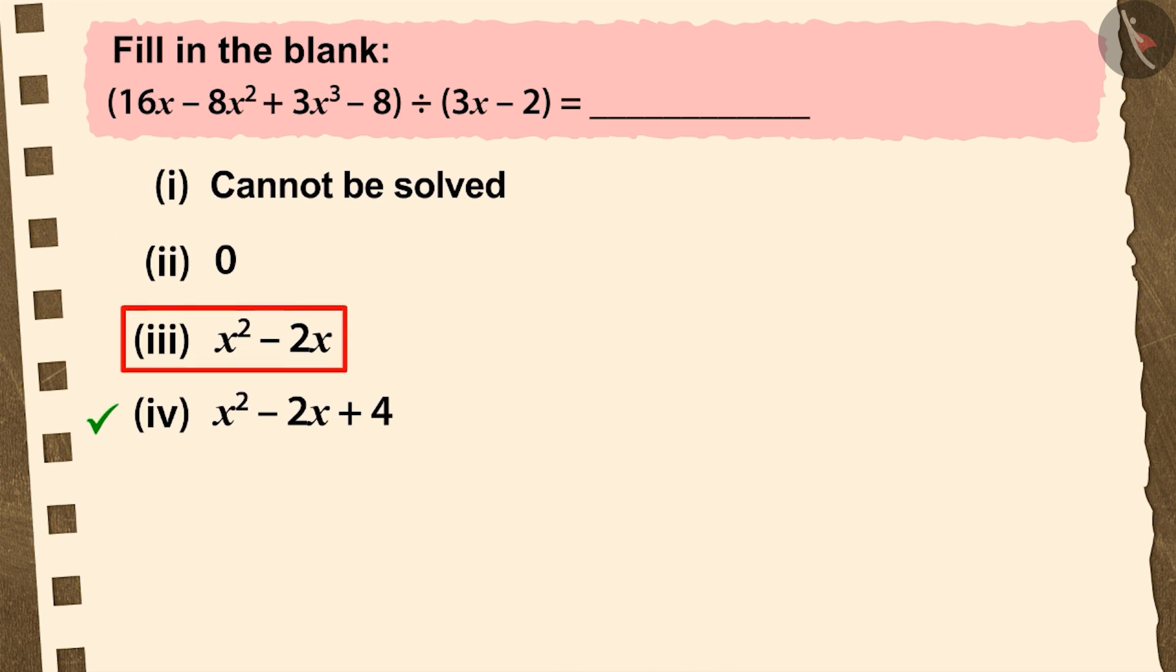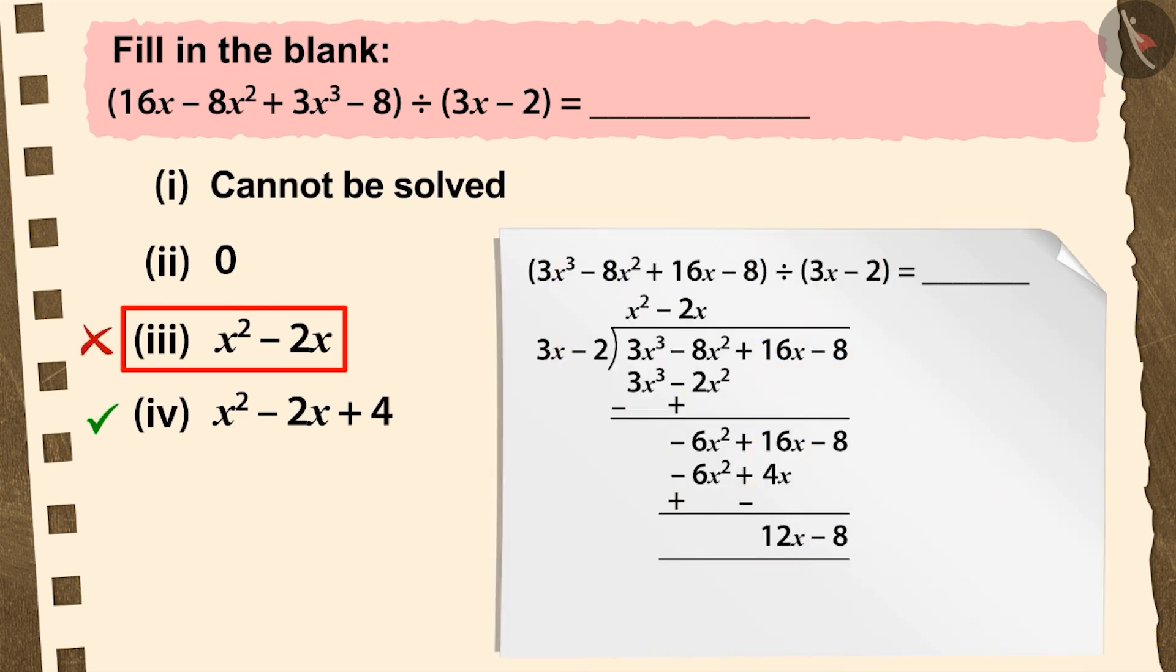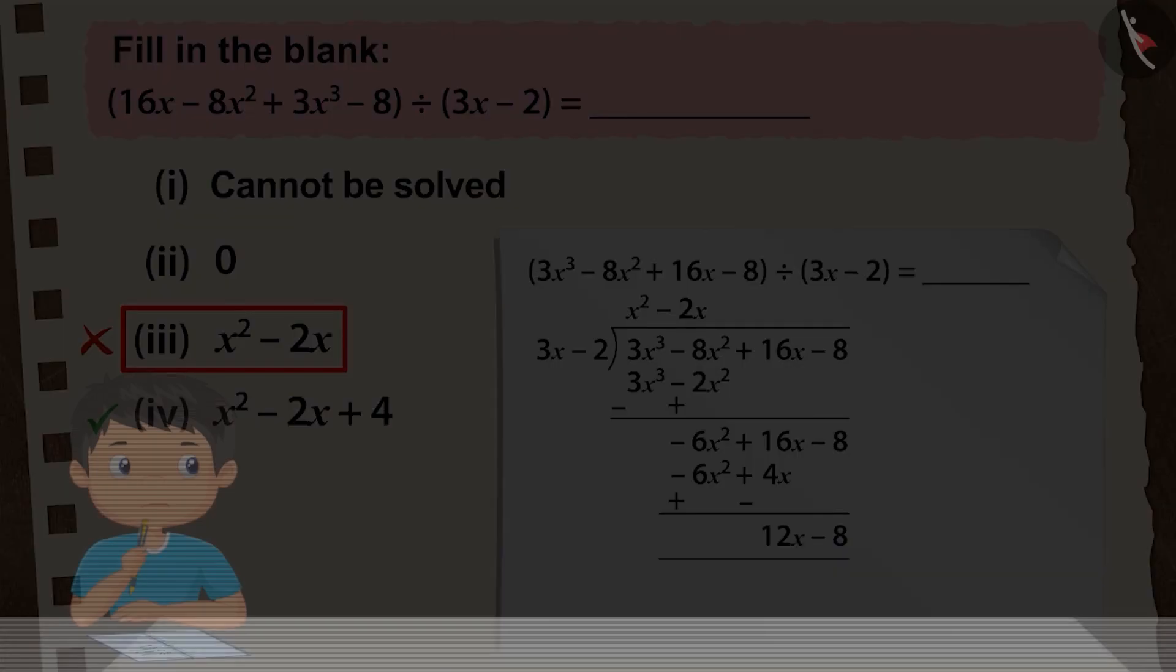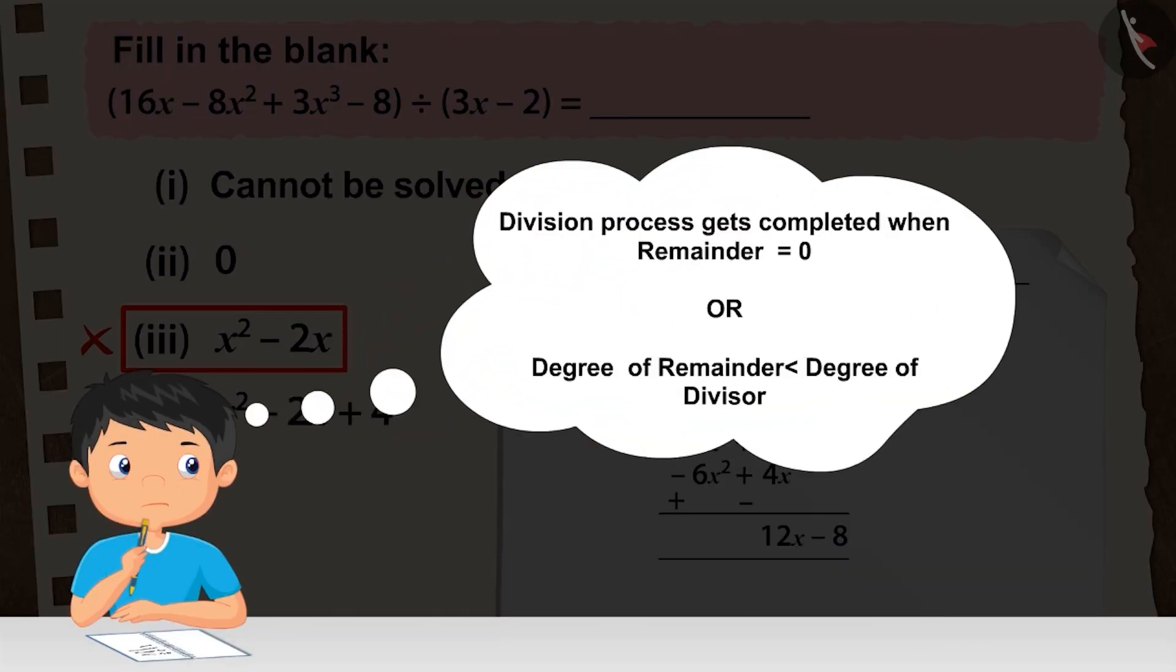If you have chosen the third option, it is a good try. But this is also an incorrect answer. Processing the division process with the second term of the quotient, the remainder is 12x minus 8, and its degree is equal to the degree of the divisor. Recall that when the remainder is 0 or the degree of the remainder becomes smaller than the degree of the divisor, then the division process ends.